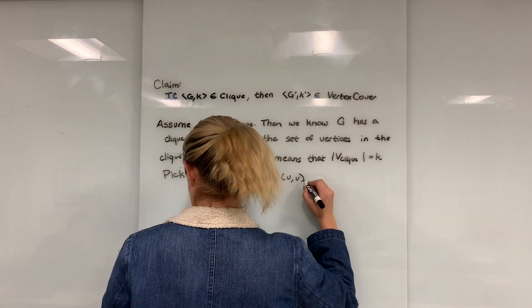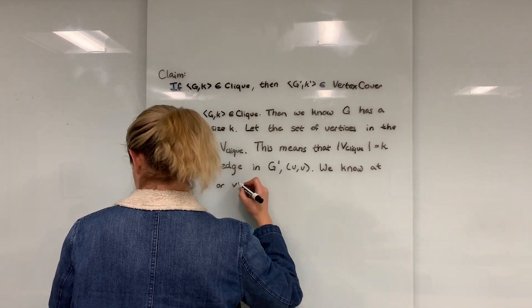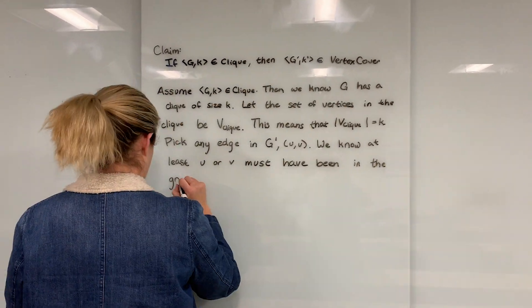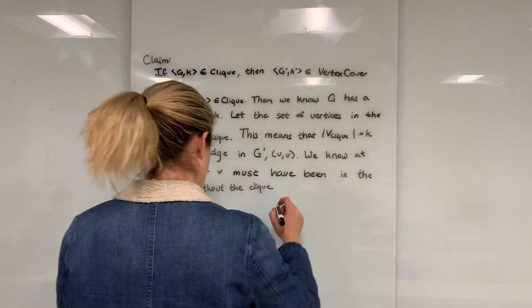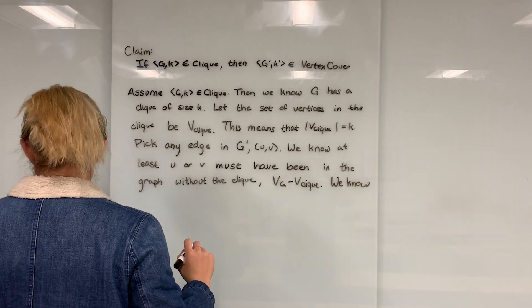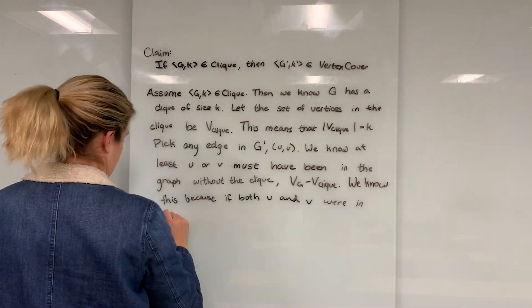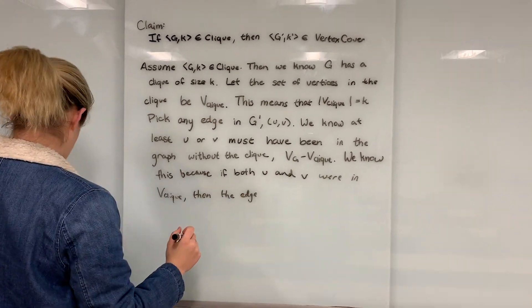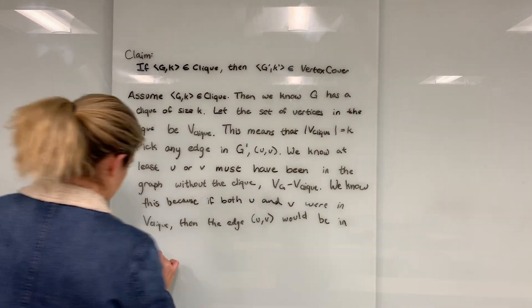So we pick any edge in G', Uv. We know at least U or V must have been in the graph, but not in the clique. So it's in V'g minus V' clique. We know this because if both U and V were in V' clique, then the edge would be in V' clique.